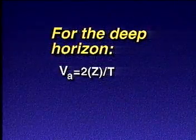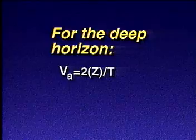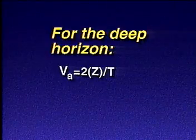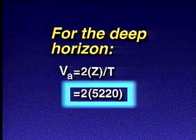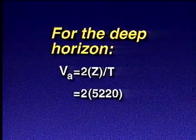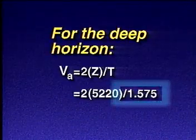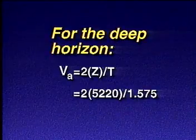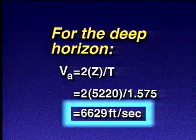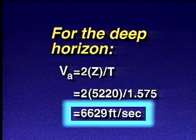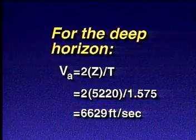So we can determine the average velocity to the deeper horizon by taking the total distance traveled, 2 times 5,220 feet, and dividing it by the total two-way travel time of 1.575 seconds, which gives us an average velocity of 6,629 feet per second.